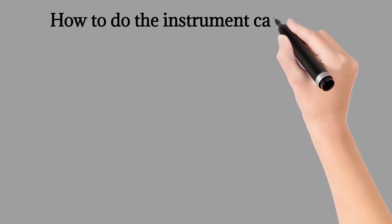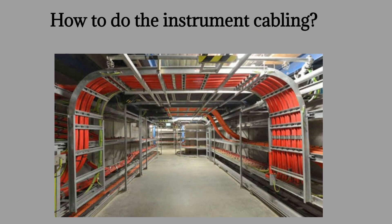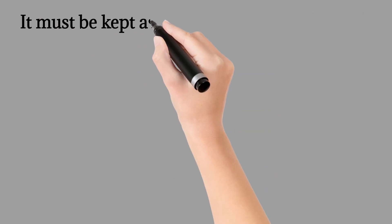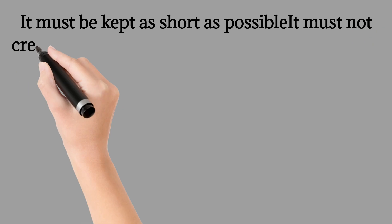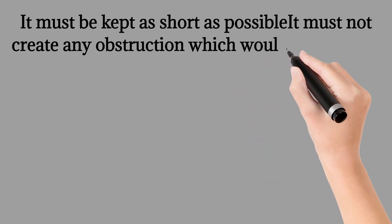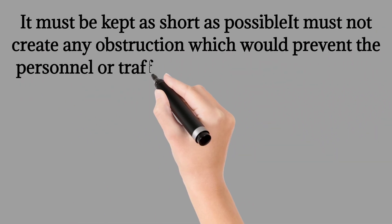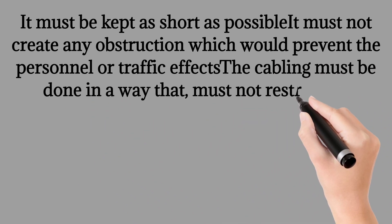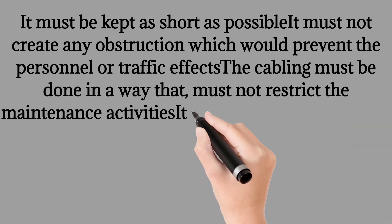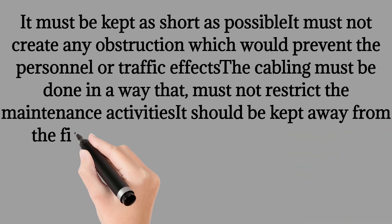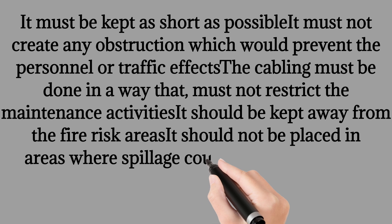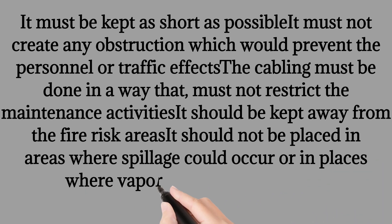How to do the instrument cabling. It must be kept as short as possible. It must not create any obstruction which would prevent the personnel or traffic effects. The cabling must be done in a way that must not restrict the maintenance activities. It should be kept away from the fire risk areas. It should not be placed in areas where spillage could occur or in places where vapors or gases are present.